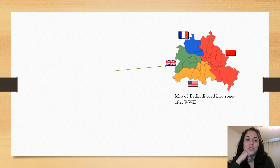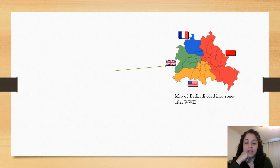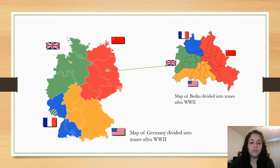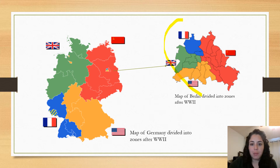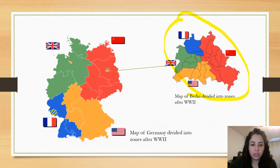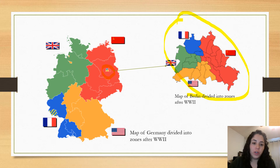Hi guys, welcome back. This is my second part on the introduction to the Cold War video. What I really wanted to emphasize in this video is Berlin. I'm going to use my highlighter again. This is the capital, the city of Berlin, which is located right here in the middle of the Soviet Union part.